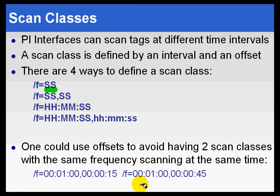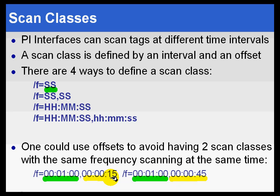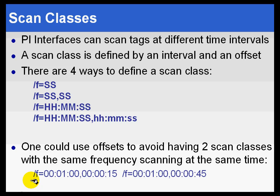One of the nice things about using frequency and offset is you can do load staggering. If you have one-minute scanning in two scan classes, you can provide offsets of 15 seconds and 45 seconds. You scan part of the tag list at 15 seconds after the minute and the rest at 45 seconds. For load balancing, this can be very useful. Within the batch file that defines the arguments, the first /F is scan class 1 and the second is scan class 2, based on their order.